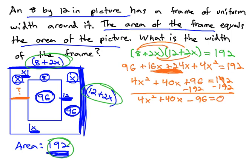Now that the equation equals 0, we can start solving it by factoring. When we factor, the first thing we always look for is the greatest common factor. You'll notice 4 goes into each of these terms. Factoring 4 out, we get x squared, plus 10x, minus 24, equals 0.